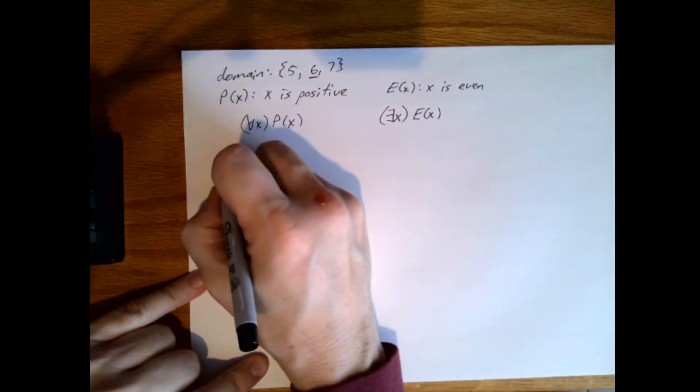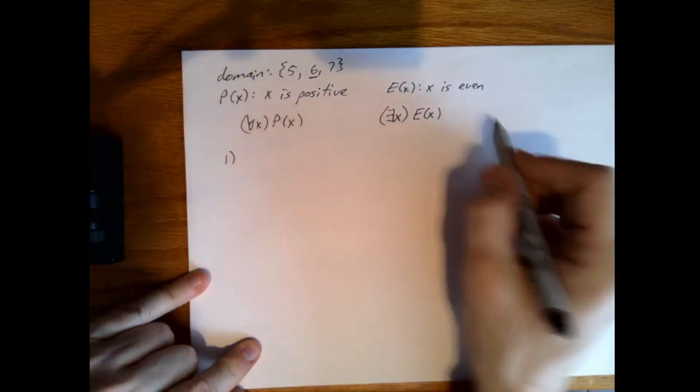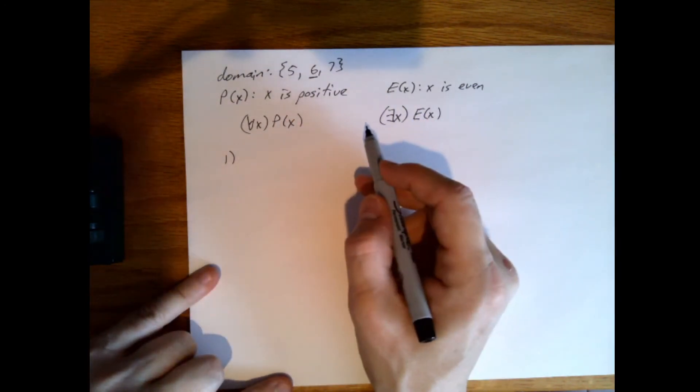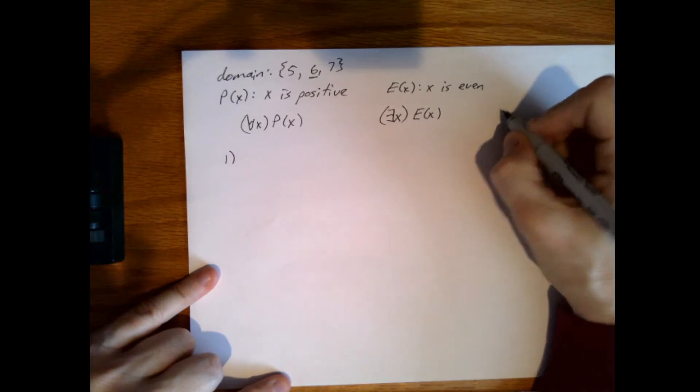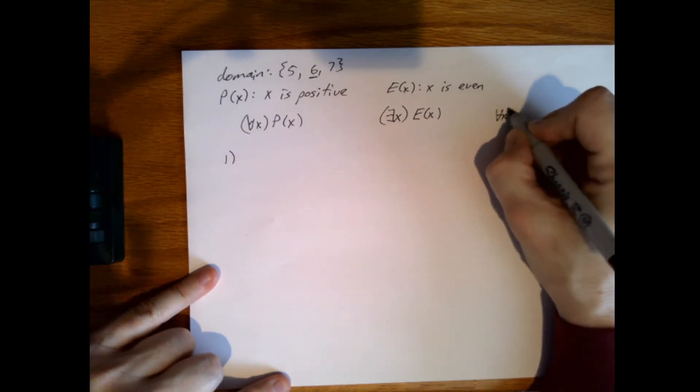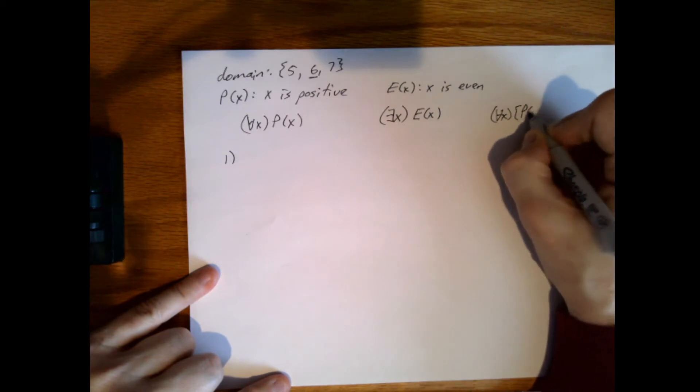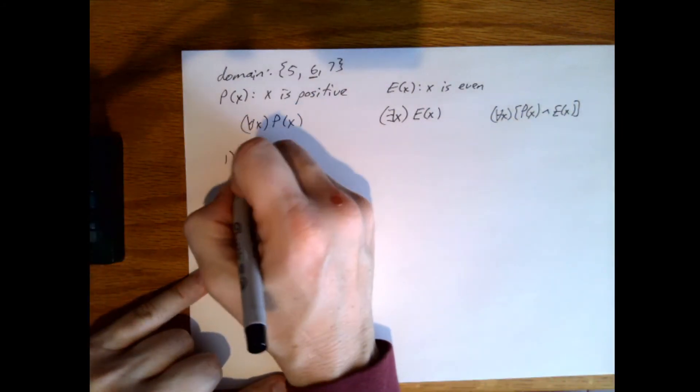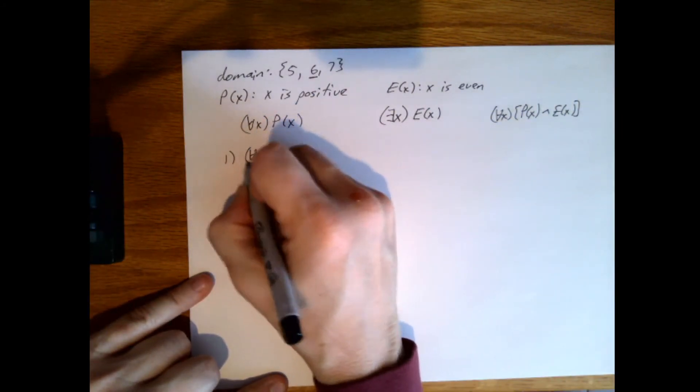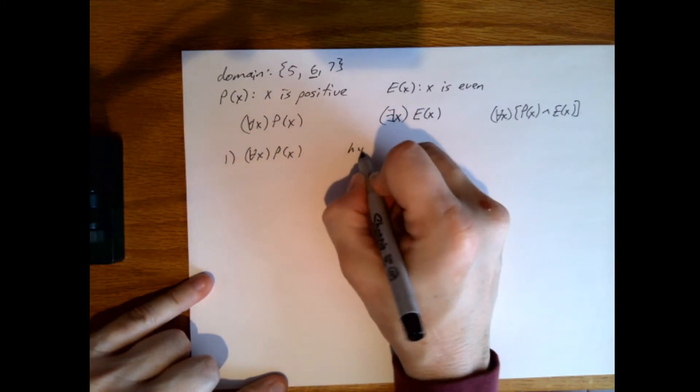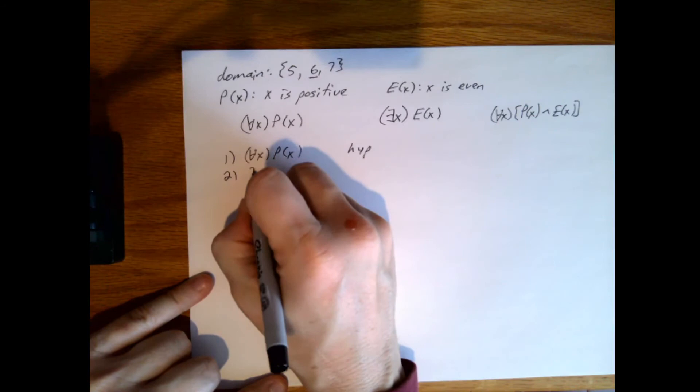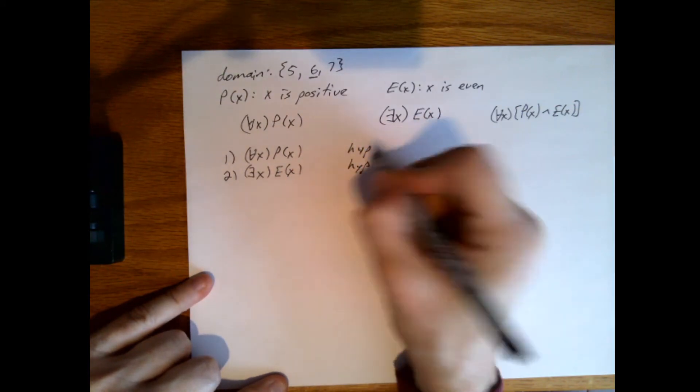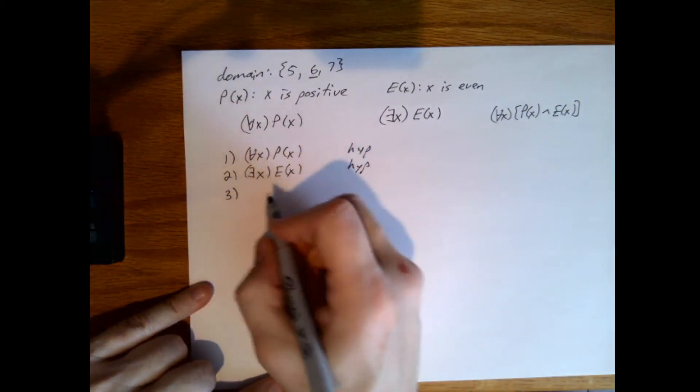So let's say we did this as our proof. We don't really have a statement to start with, but let's say that we were given this fact, we're given this fact, and somewhere we need to combine the two. So maybe eventually we need to get to the point where we have something like this, P of X and E of X, something like that. So for all X, P of X, that's a hypothesis. There exists an X, or we could use Y here. That's also a hypothesis.